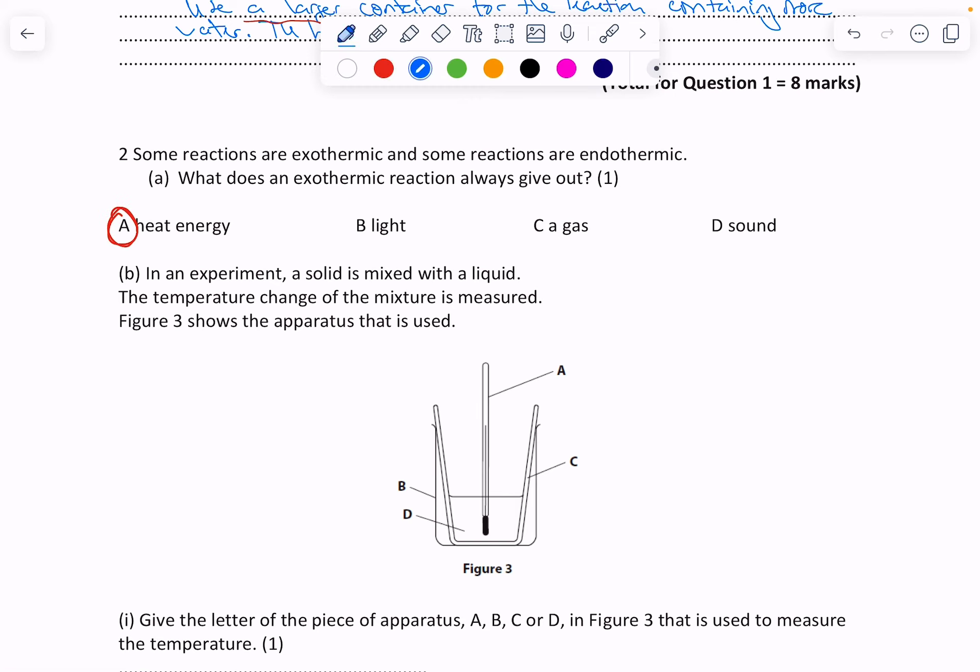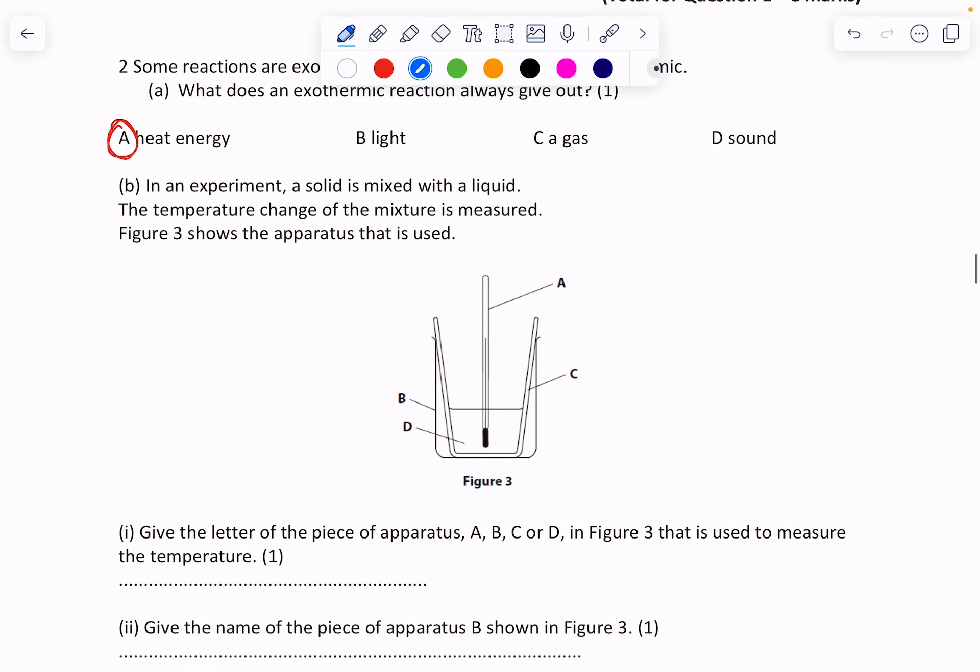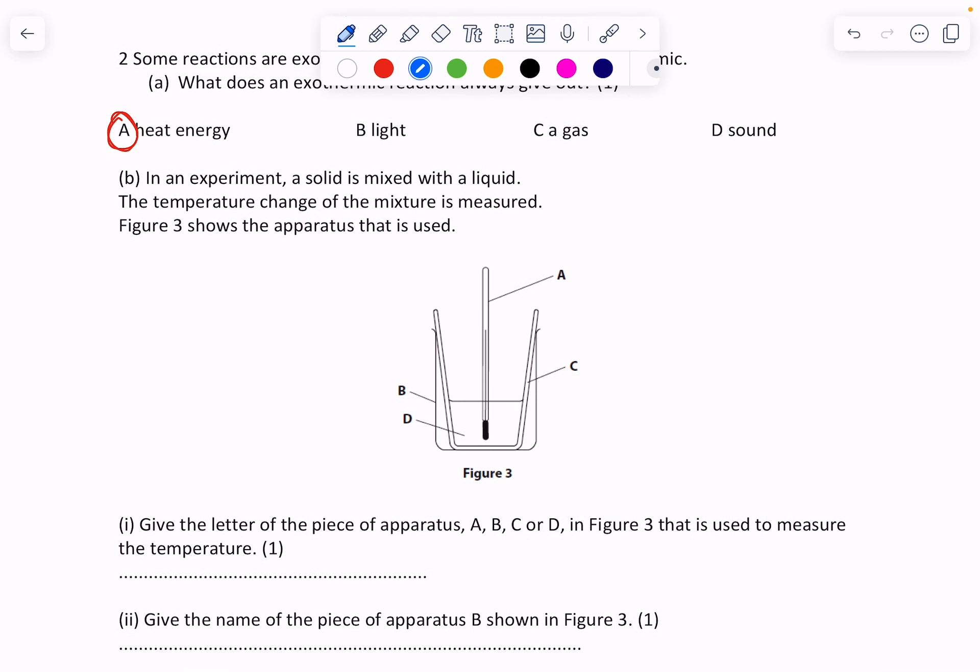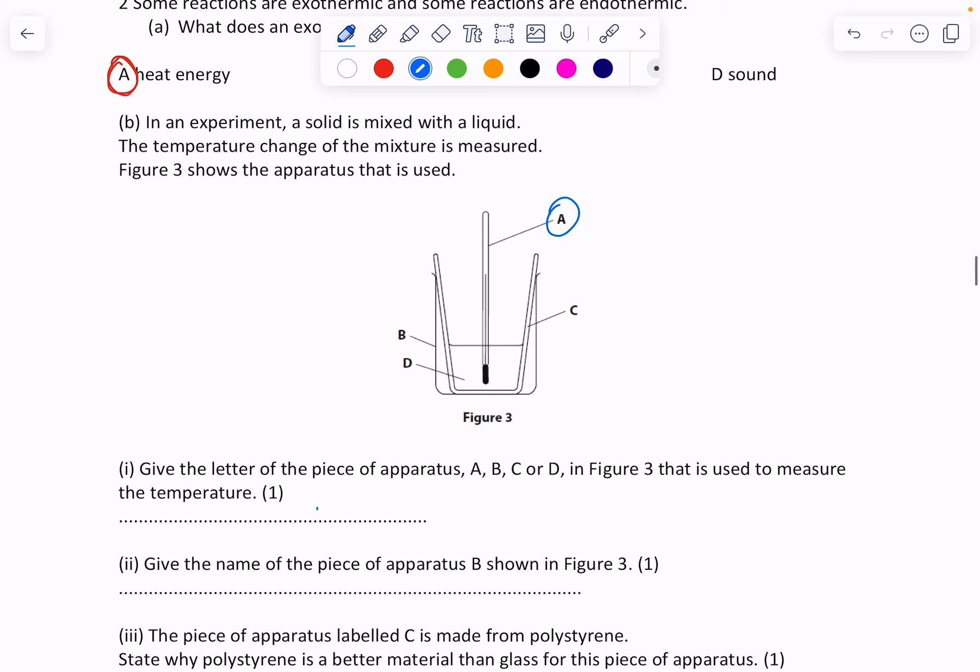Give the letter of the piece of apparatus A, B, C, or D that is used to measure temperature. So this here is a thermometer, and therefore it is used to measure the temperature, so we've got letter A.